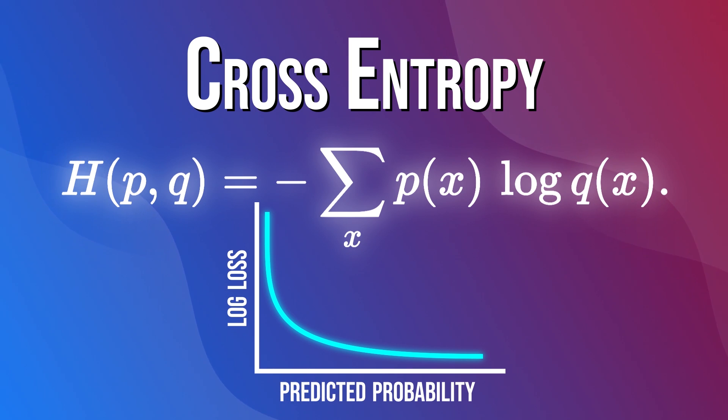If we were to graph out the range of possible loss values given a true observation like is rock music equals 1, we can see that as the predicted probability approaches 1, the log loss slowly decreases. But as the predicted probability decreases, the log loss increases pretty fast.